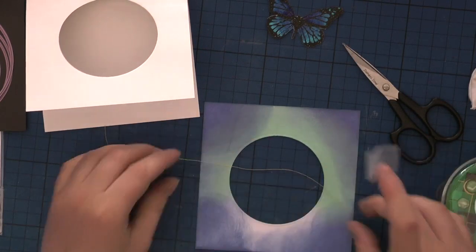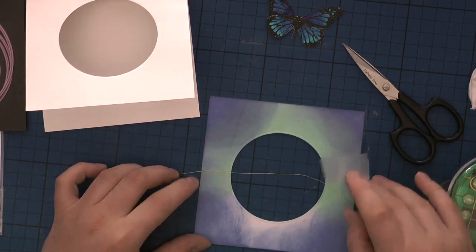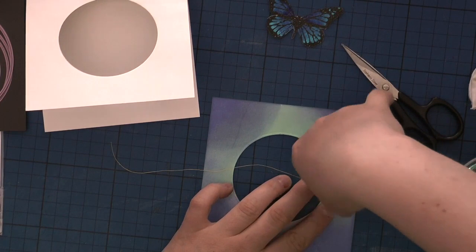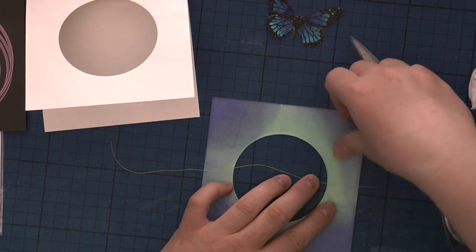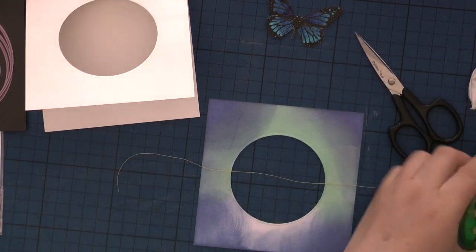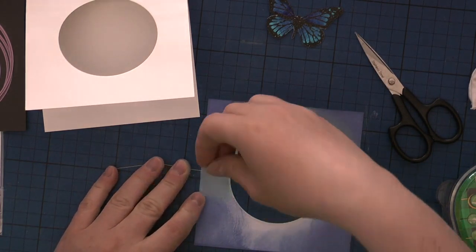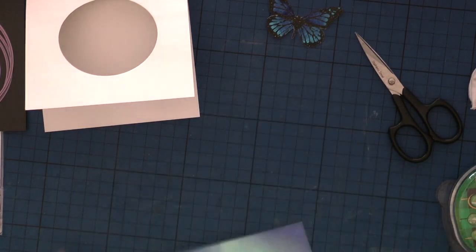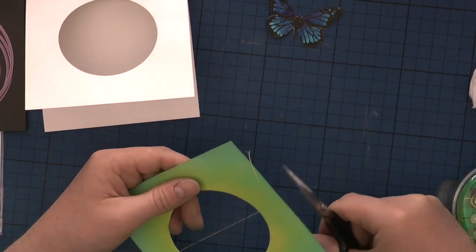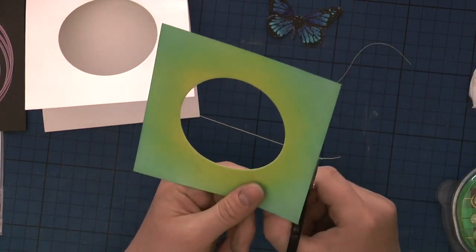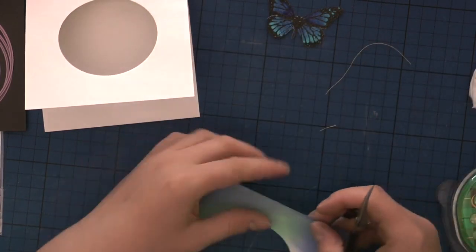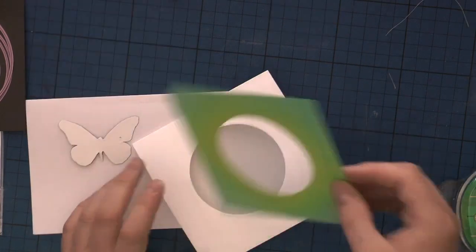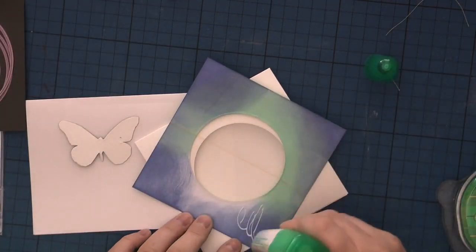I didn't quite like how it didn't blend, so I'm now using scotch tape to adhere my thread. It needs to be kind of tight when you later want to add the butterfly in the center of your thread. Now I'm going to add the glue and add my front panel on top of my card base.